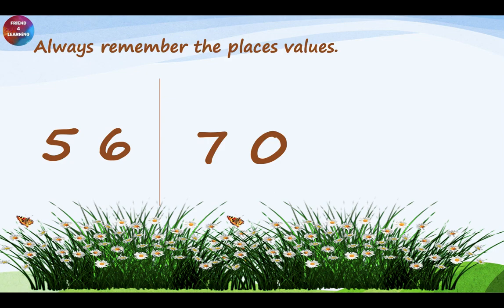Always remember the place values — this is going to play an important role for this lesson. Imagine I have the number 56. You need to write the place values for this number, that is, 1's and 10's. What is in the 10's place? Number 5 is in the 10's place. Also, I have the number 70. We write the place value — 1's and 10's — and what is in the 10's place? It's number 7.